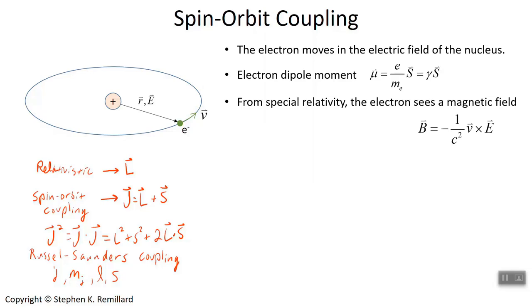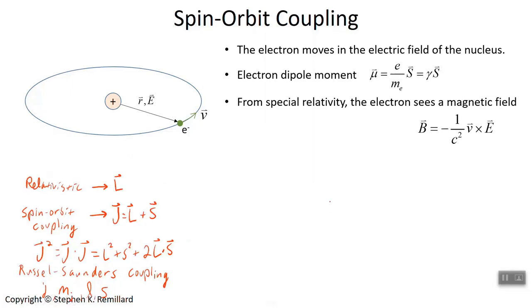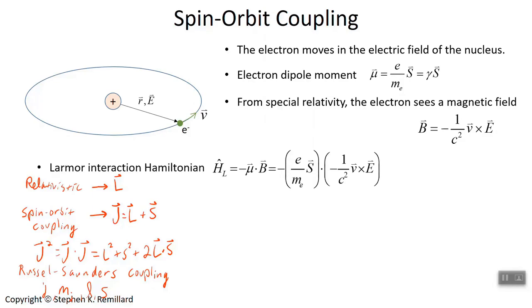That electron has a magnetic dipole moment and it's moving through a magnetic field. There's a potential energy you can write because you have the magnetic dipole moment of the electron — gamma times S — in a magnetic field. When a dipole moment is in a magnetic field there's a potential energy, minus mu dot B. In this context it's referred to as the Larmor interaction Hamiltonian. So you have the electron's dipole moment dotted with the magnetic field that results from the electron's motion through the electric field of the nucleus.